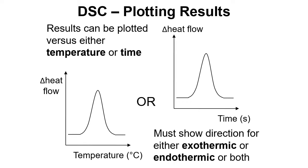What's important is that we must show the direction for either an exothermic event or endothermic event or both. We need an arrow somewhere on the thermogram showing us which direction is exothermic or endothermic, or arrows for both of them. That's because there's no convention over which way is exothermic and which way is endothermic, and so we need to indicate that on our thermograms.